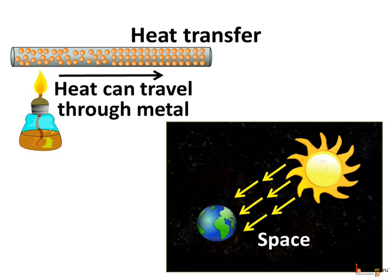If we heat one end of a metal rod while holding the other end, soon the end you are holding would be hot as the heat travels through the metal. But there is a very vast space between the sun and the earth, and no medium is there for heat to travel. Then how does the sun's heat reach the earth? This means heat can travel in different ways.